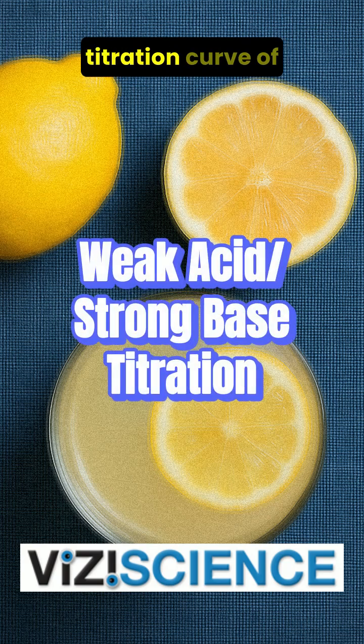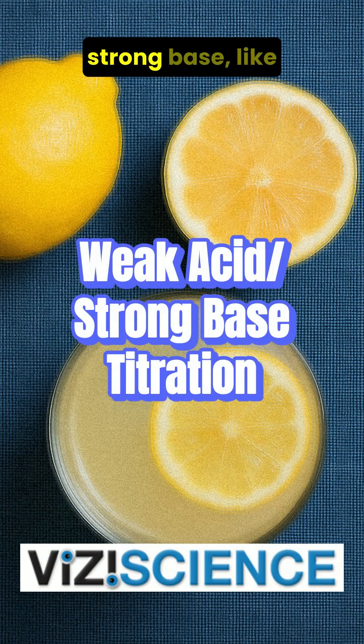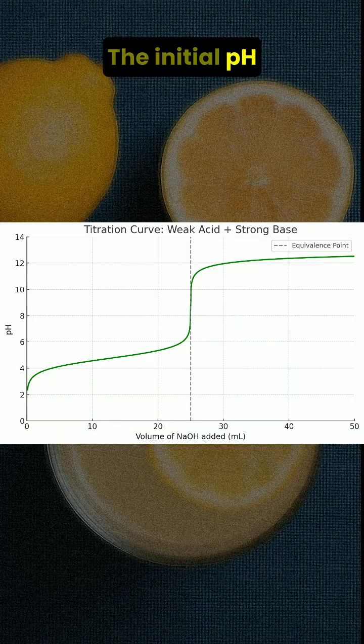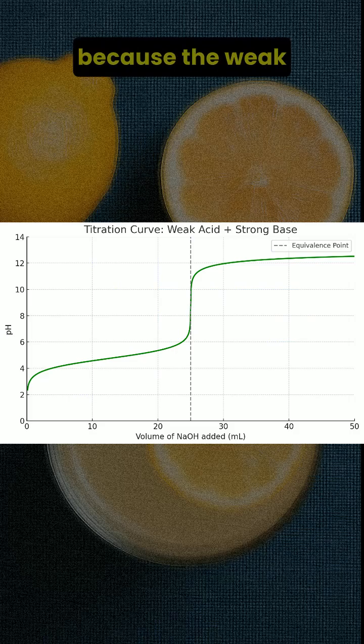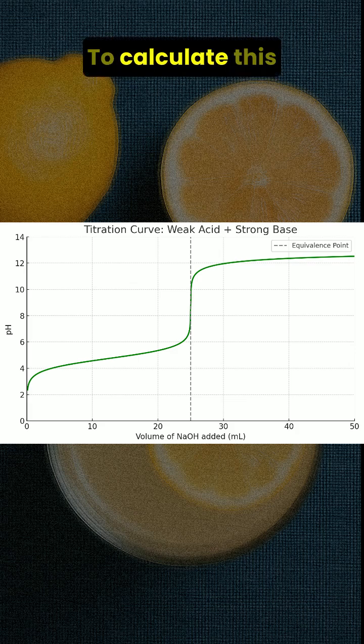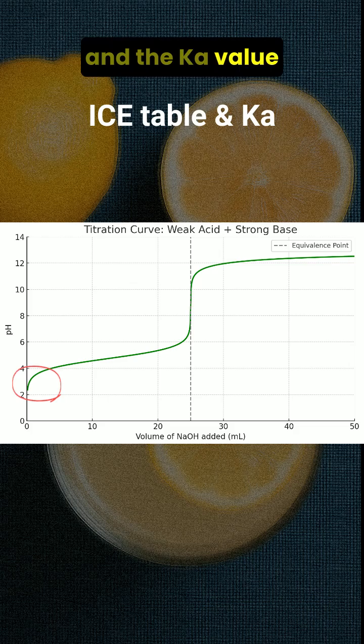In this video we'll look at the titration curve of a weak acid such as acetic acid titrated with a strong base like sodium hydroxide. The initial pH of a weak acid solution is higher than that of a strong acid because the weak acid only partially dissociates. To calculate this initial pH we use an ice table and the Ka value of the acid.